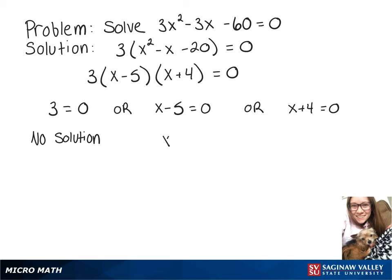x - 5 = 0; when we add 5 to both sides, we get x = 5. And x + 4 = 0 gives us x = -4.